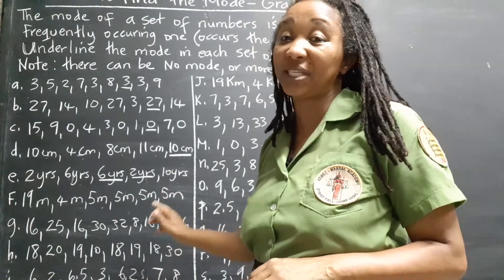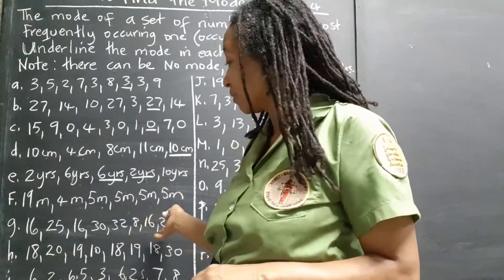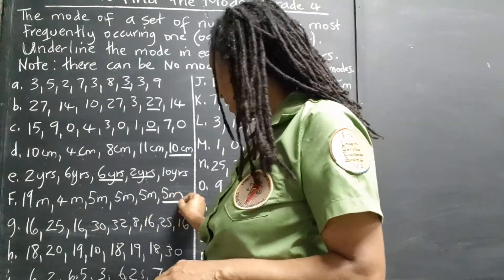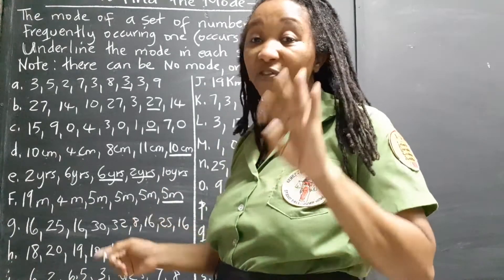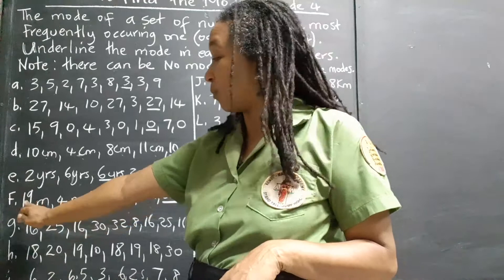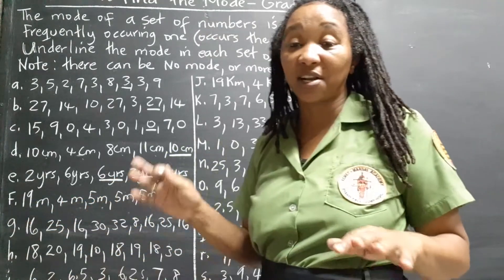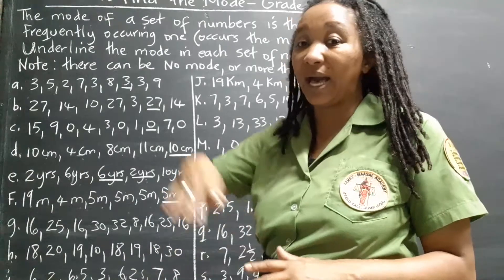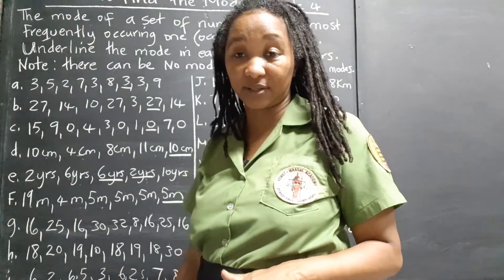Set F is clear — five meters is the mode. There are four of them and only one four-meter and one nineteen-meter measurement. Five is the clear champion; it's like a mile ahead of the others if it were a race.